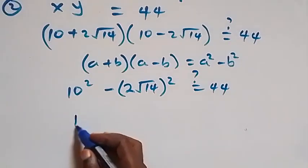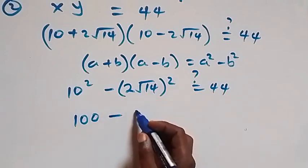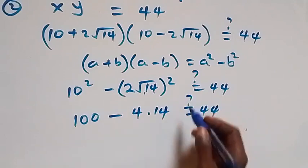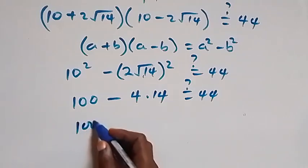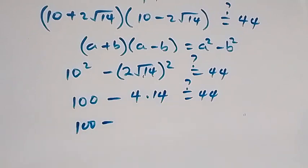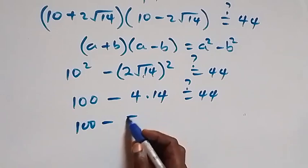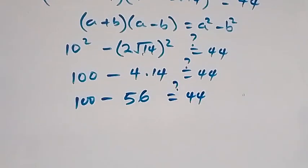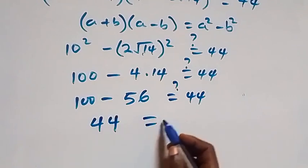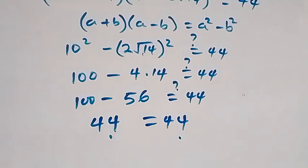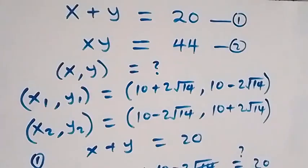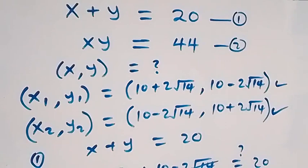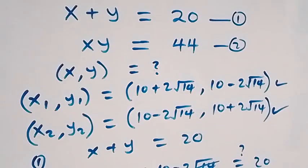10 squared is 100. Then minus: 2 squared is 4, times the square root squared gives 14, so minus 4 times 14 gives 56. Therefore 100 minus 56 equals 44, which equals 44. The left hand side equals the right hand side, confirming this set of solutions satisfies the given problem. Thank you for watching, don't forget to subscribe for more videos, turn on the notification bell, share this video, give it a thumbs up, and see you next class.